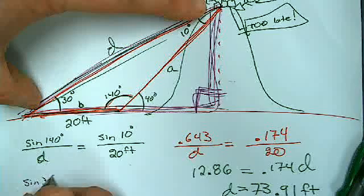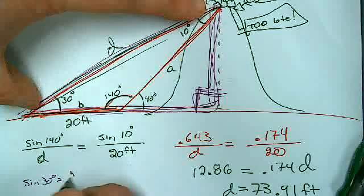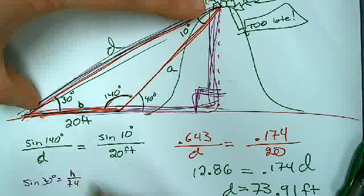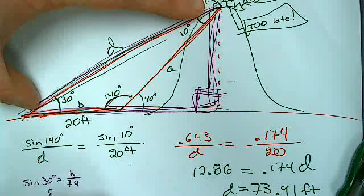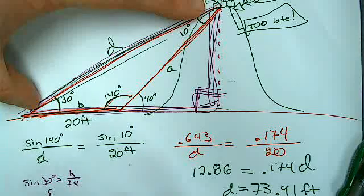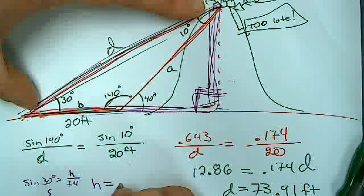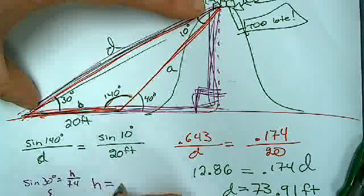Sine of 30 degrees is the opposite, H, over the hypotenuse. We'll call it 74 to keep the math easy right now. 74 feet, yada yada yada, like we've been practicing. And you're going to get H is equal to 37 feet.